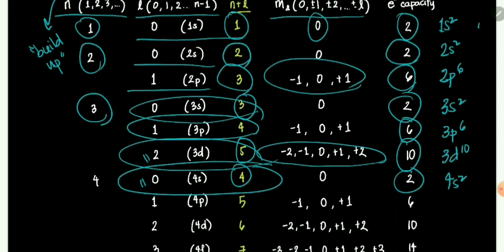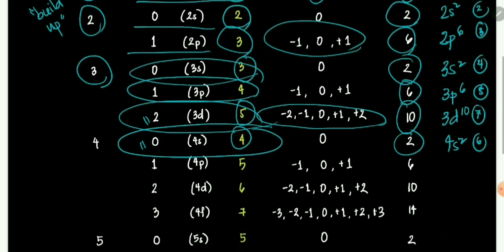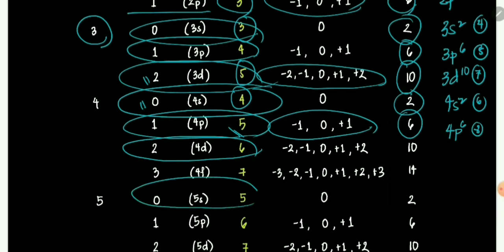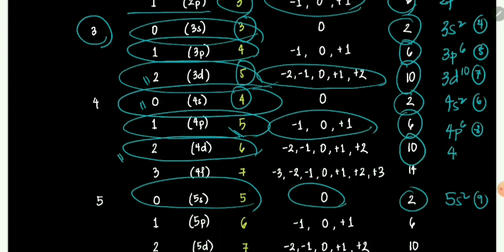So the order so far is: 1s2, 2s2, 2p6, 3s2, 3p6, 4s2, 3d10. What comes next after 3d10? We have 4p, which also has n plus l equals 5, with 3 magnetic quantum numbers, so a maximum of 6 electrons — 4p6. Next is 5s2 (9th), then 4d10 (10th). After that, 5p has n plus l equals 6, capacity of 6 — 5p6. Then 6s2 (number 11).